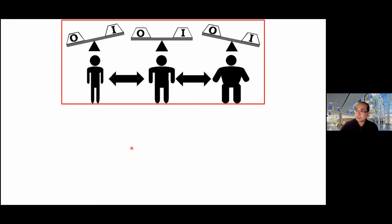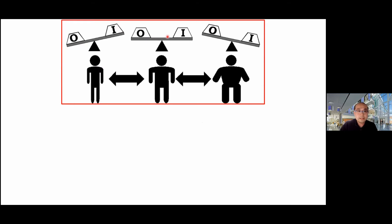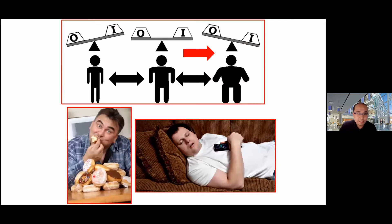First, I want to share this illustration of energy balance. As we know, our body weight will be stable if energy in is equivalent to energy out, usually through physical activities or exercise. But in some cases, when energy in outweighs energy output — for example, over-nutrition, especially during holiday breaks, as well as sedentary behavior and physical inactivity — we'll start seeing weight gain. Over the long term, that's how one becomes obese.